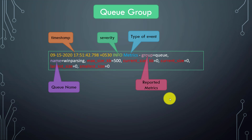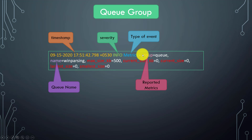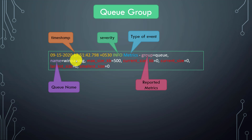Now let us talk about the queue group. The log structure is similar — we still have timestamp, severity, and type=metric — but in this case group=queue. As we discussed, each processor communicates via persistent queues: a processor sends its output to a queue and the next processor takes from that queue. In Splunk there are many queues, like the parsingQueue — we will come across other queue names in the internal logs.